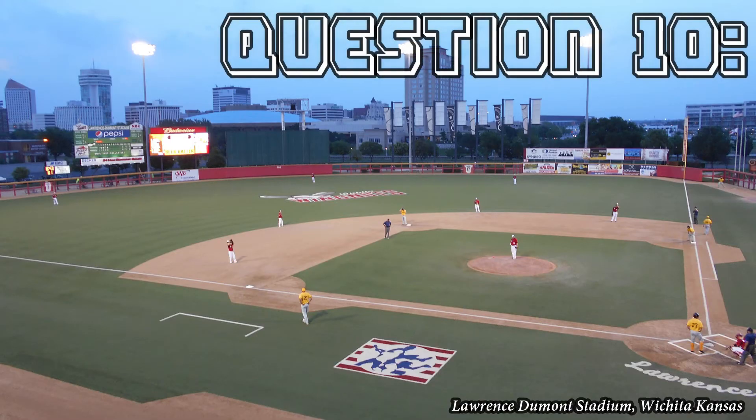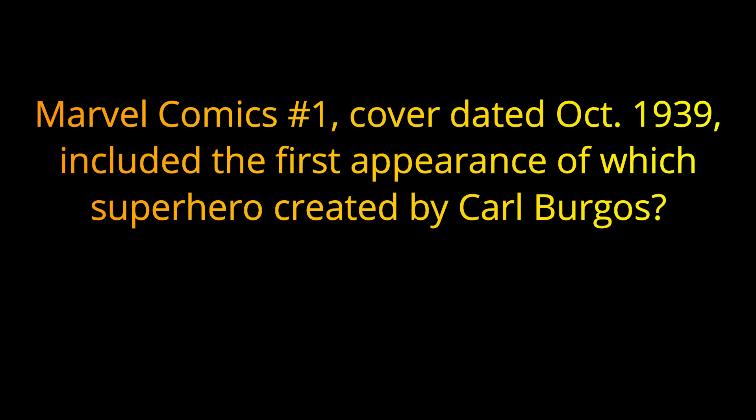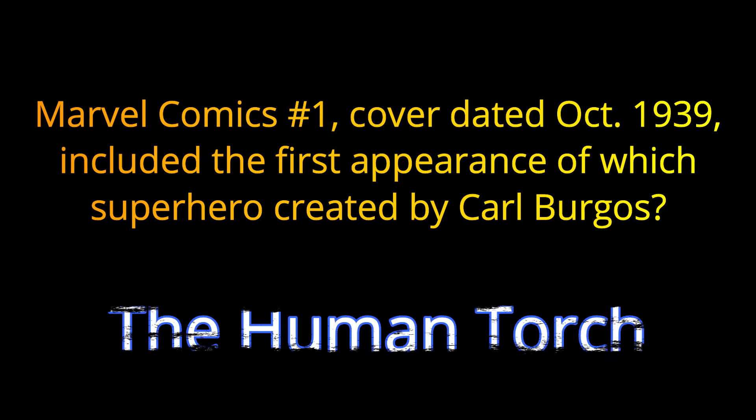Question 10. Marvel Comics No. 1, cover dated October of 1939, included the first appearance of which superhero created by Carl Burgos? The answer is the Human Torch.